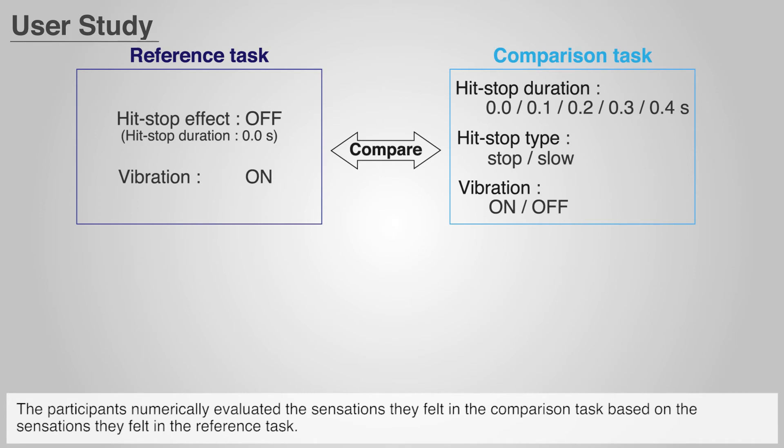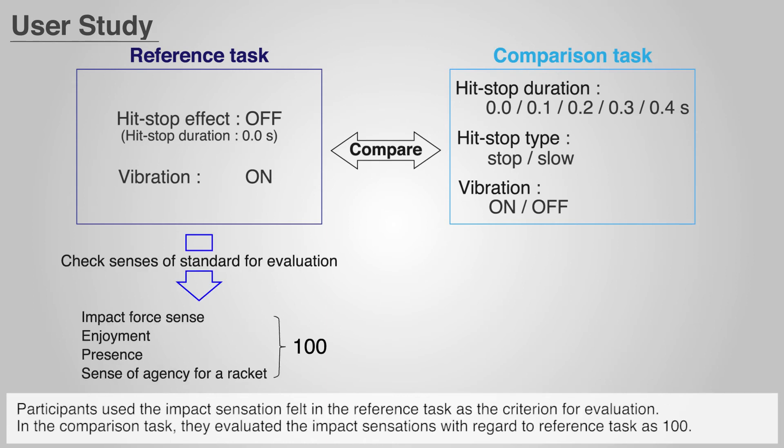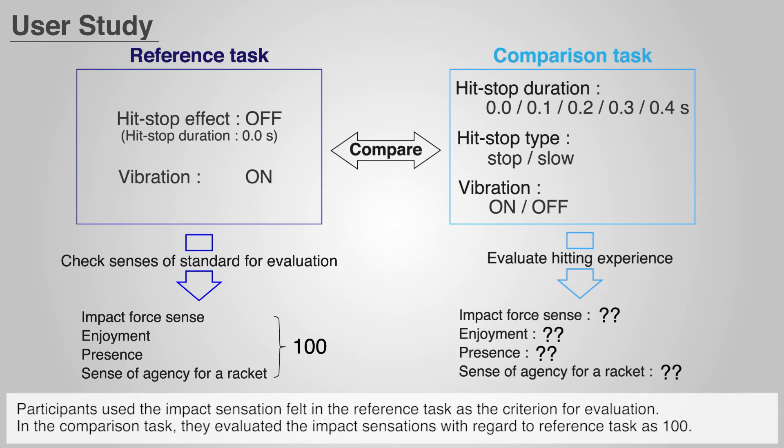The participants numerically evaluated the sensations they felt in the comparison task based on the sensations they felt in the reference task. Participants used the impact sensation felt in the reference task as the criterion for evaluation. In the comparison task, they evaluate the impact sensations with regard to the reference task as 100.